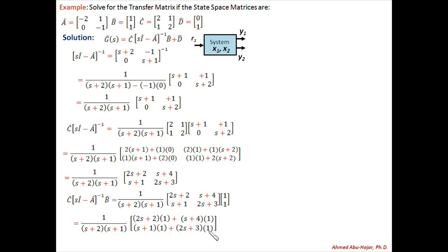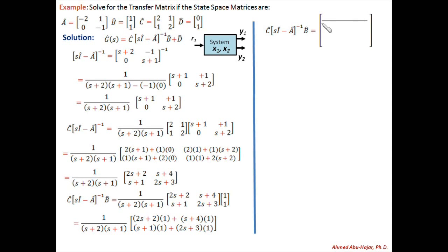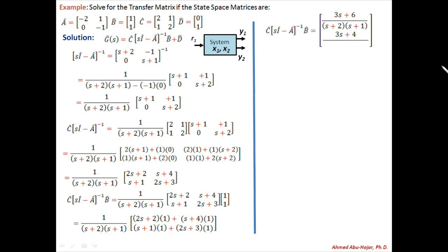Now we evaluate each element and bring the scalar rational function inside the matrix. The first element: 2s + s = 3s, and 2 + 4 = 6, giving (3s+6)/[(s+2)(s+1)]. The second element: s + 2s = 3s, and 1 + 3 = 4, giving (3s+4)/[(s+2)(s+1)].